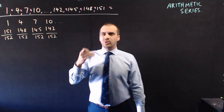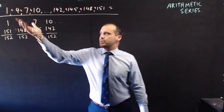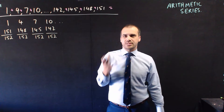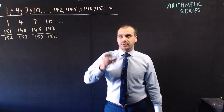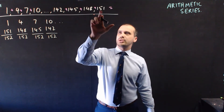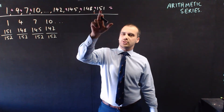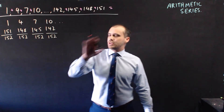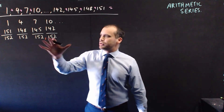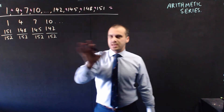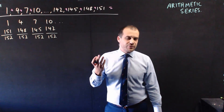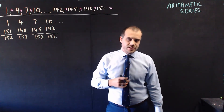Now all we need to know is how many of these pairs of numbers there are. If I knew which term that was — which number term that was — then I would know how many pairs there were, because there would be half that number of pairs.